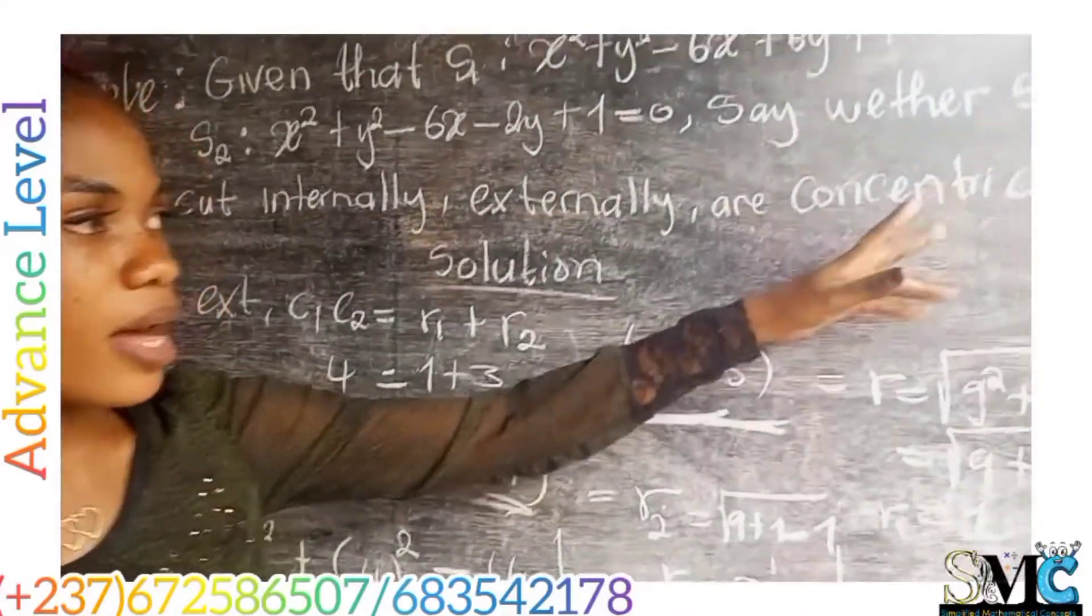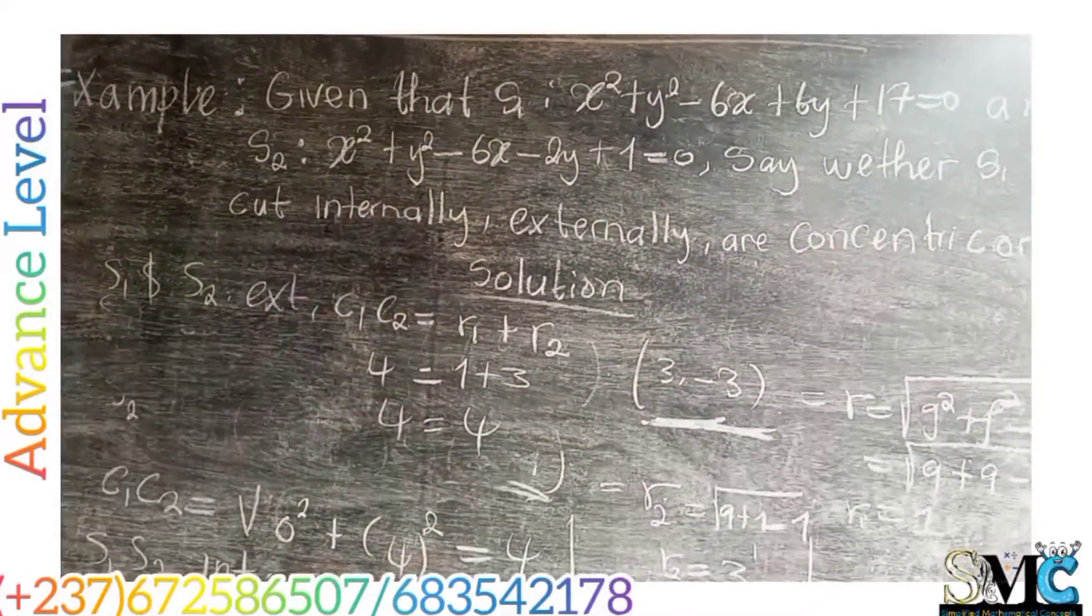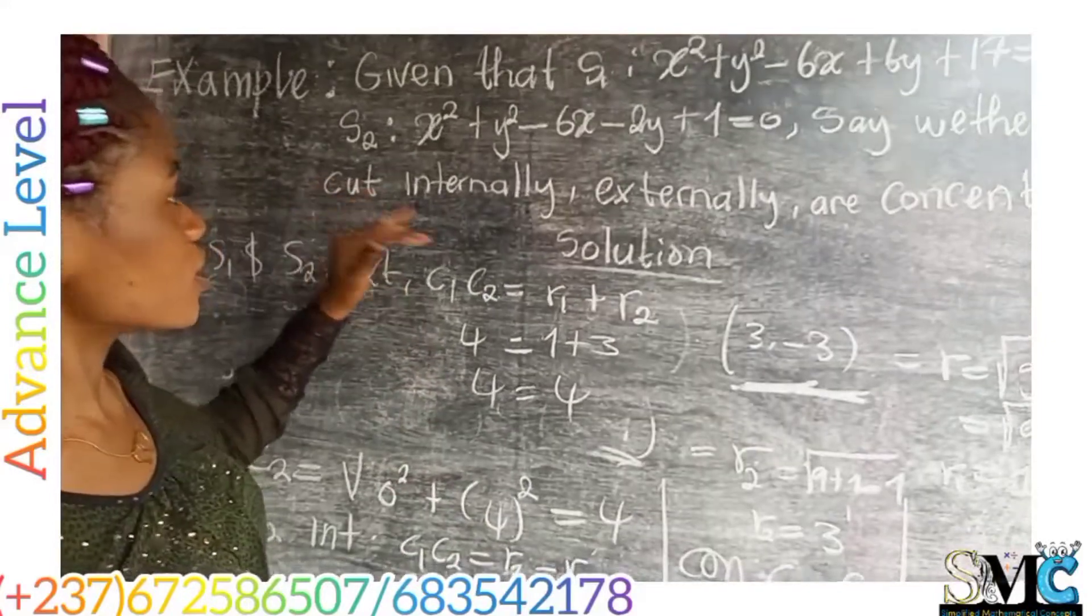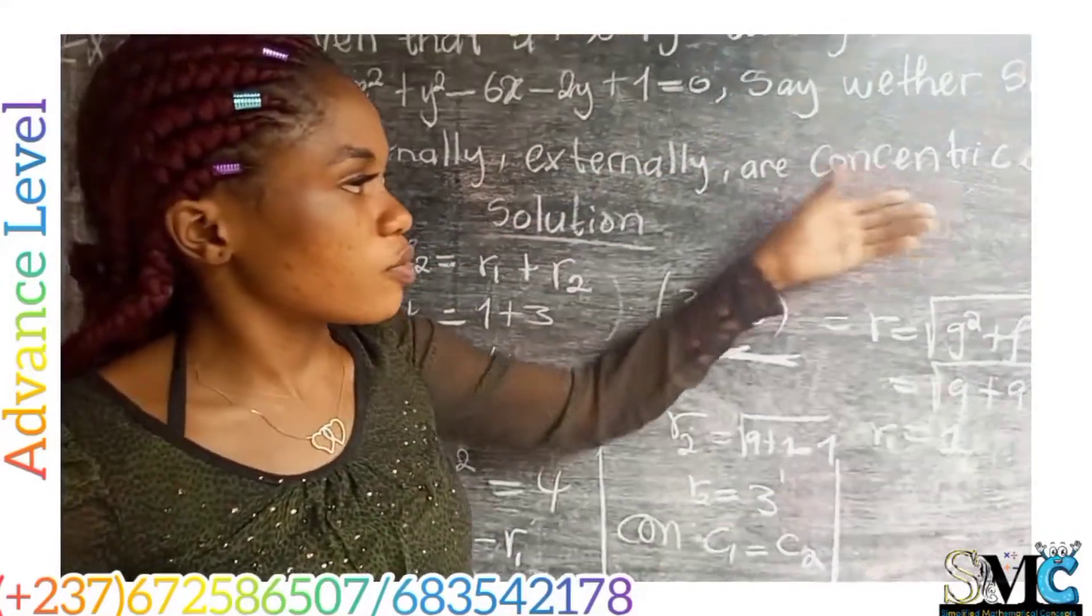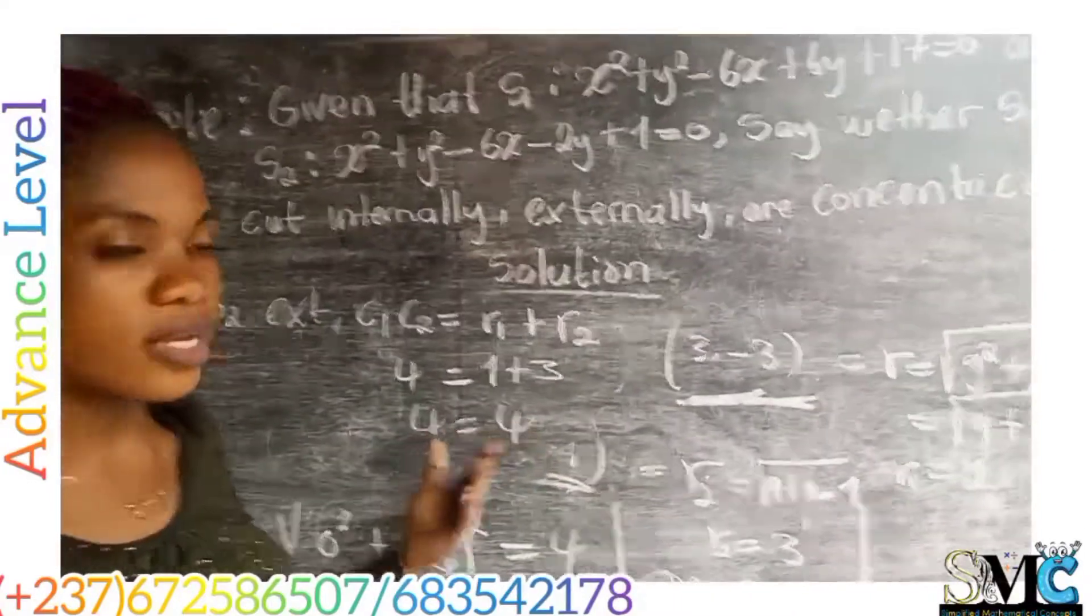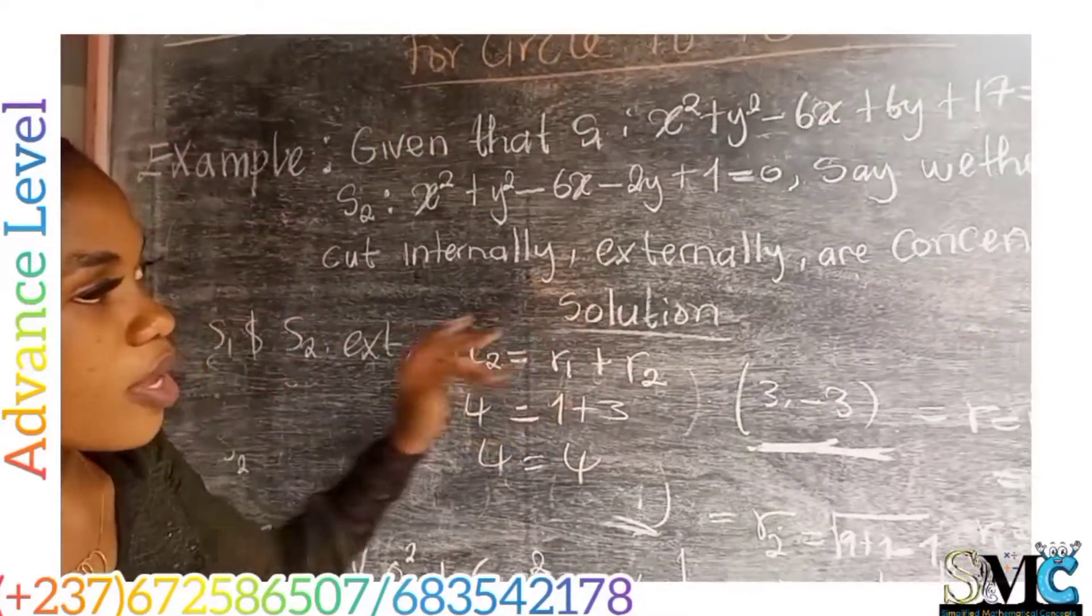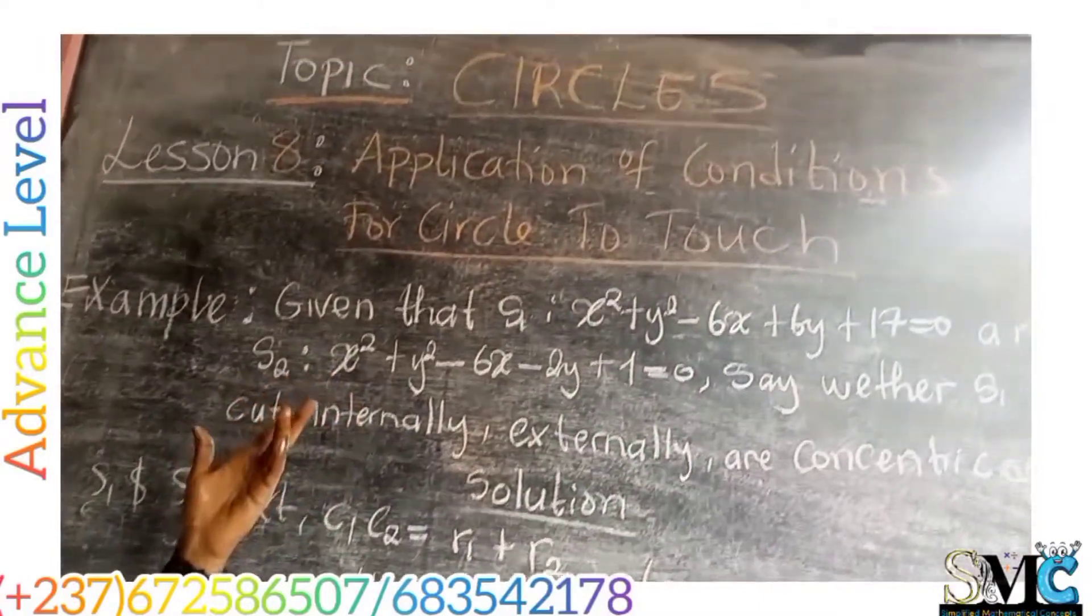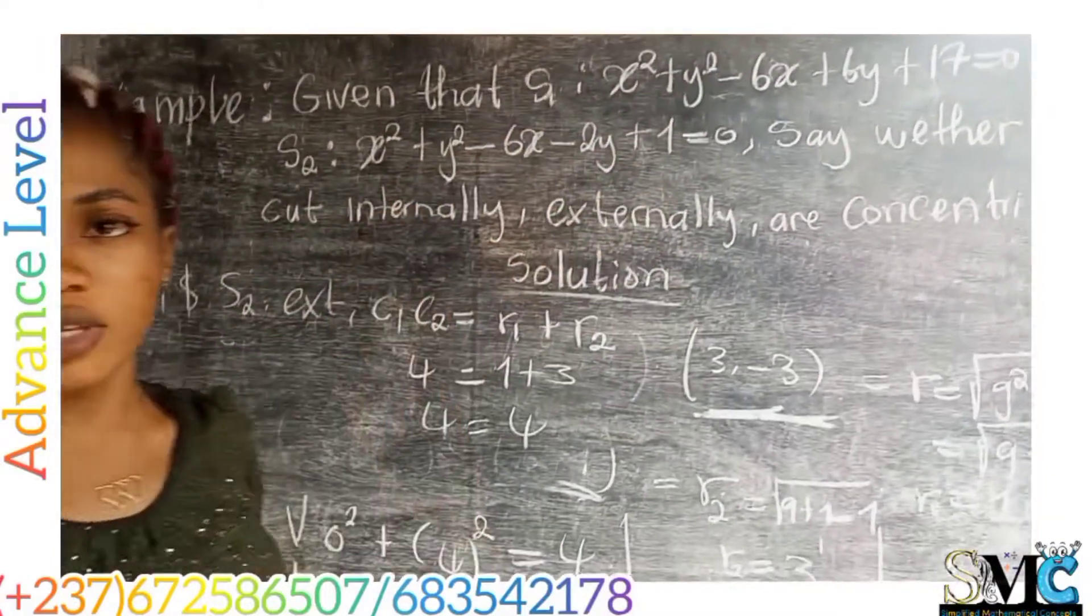So for orthogonally, you can apply the same methodology of approach. In this case, we have been able to say the relation that exists between these two circles. As you can see, the two circles touch externally. And this is the procedure you follow in order to show that two circles verify any of the given conditions.